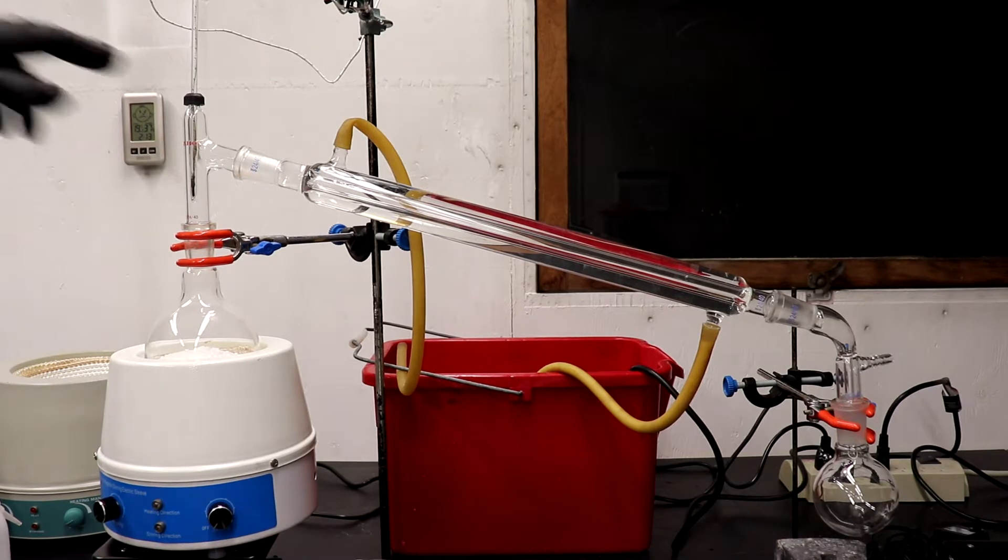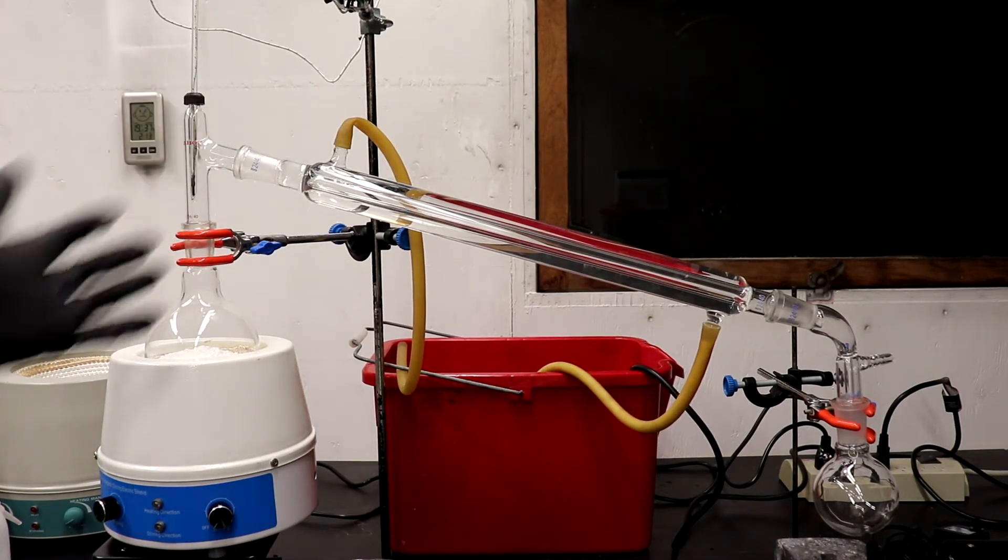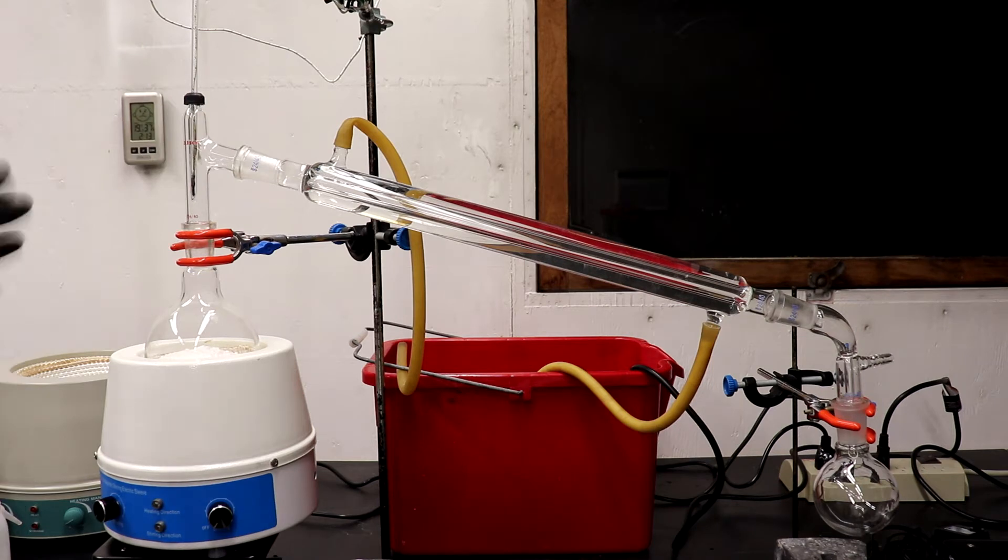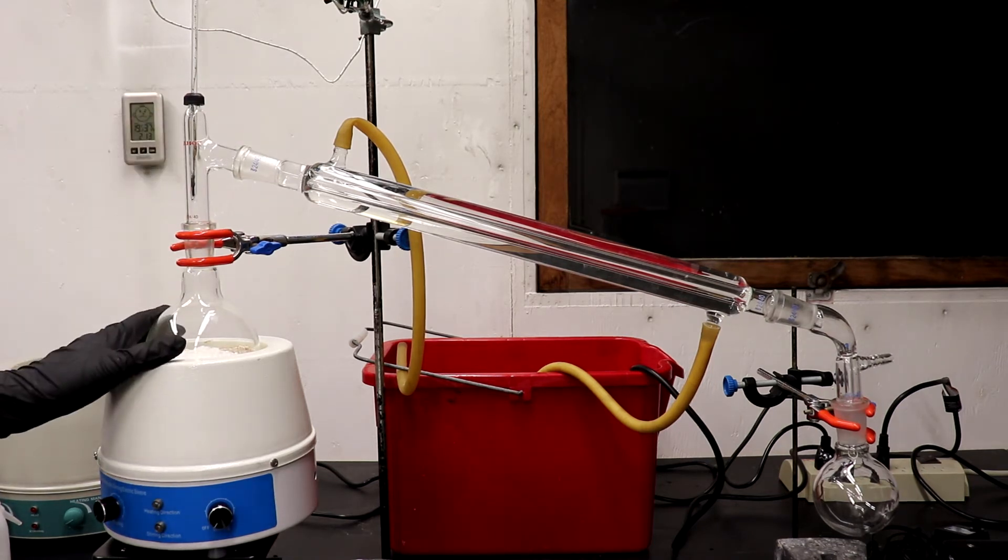Now the 40cm Liebig I'm using here is definitely excessive since aniline boils at 184 degrees Celsius, you really don't need much to condense it. So I could have gone away with using a smaller Liebig, but my other ones are dirty so this is what I have.